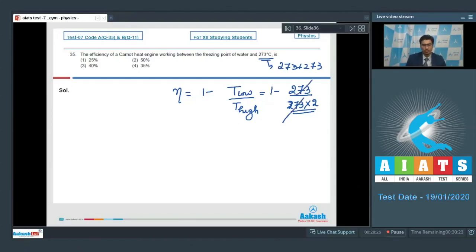When cancelling 273, efficiency turns out to be 1 minus 1 by 2 that will be 1 by 2, that will be 50 percent, and hence option number 2 is the correct answer.